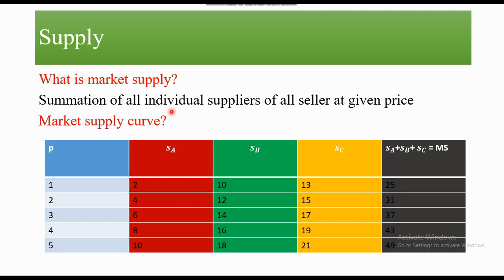What do we call a supplier? For example, there is Seller A, Seller B, and Seller C. When we add their individual supplies, it becomes market supply at a given price. The same concept applies: Supplier A, Supplier B, Supplier C — when we add all suppliers together, it becomes market supply at a given price.